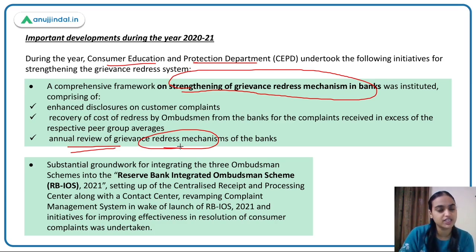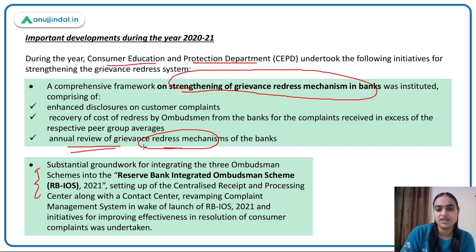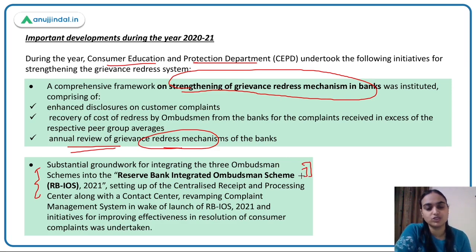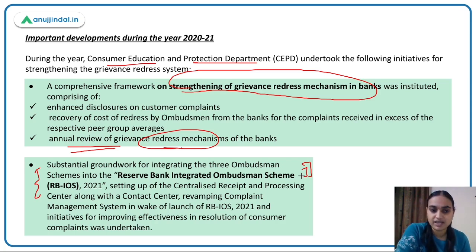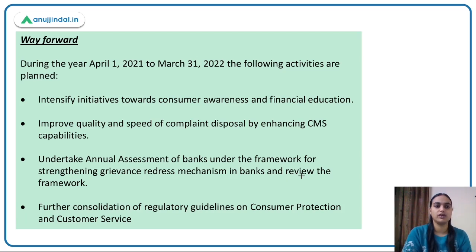The second important initiative is the introduction of the Integrated Ombudsman Scheme, launched alongside the Retail Direct Scheme. All three existing ombudsman schemes were integrated into one — the objective being 'one nation, one ombudsman scheme.' A central receipt and processing center was also set up to handle complaints under this revamped system.